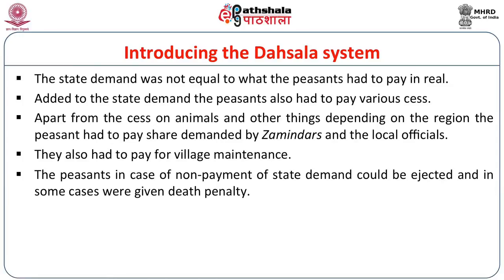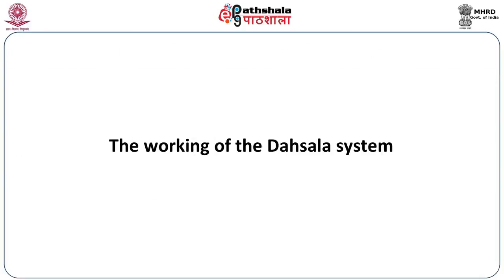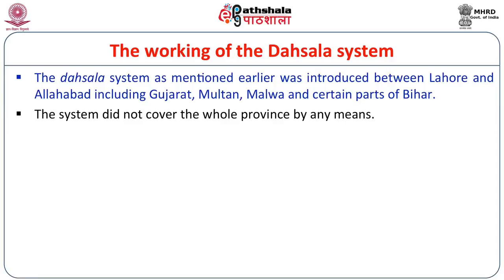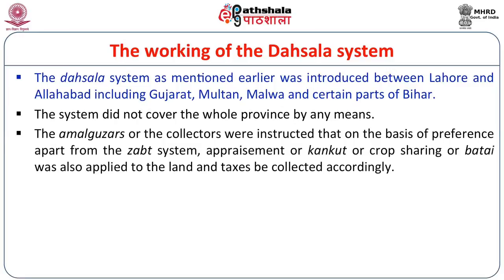The peasants in case of non-payment of state demand could be ejected or in some cases even given the death penalty. The Dasala system was introduced between Lahore and Allahabad, including Gujarat, Multan, Malwa and certain parts of Bihar. It is true that the system did not cover the whole province by any means. The Amal Guzars or collectors were instructed that, on the basis of preference apart from the zat system, appraisement or kaankut or crop sharing or batai was also applied to the land and taxes collected accordingly.